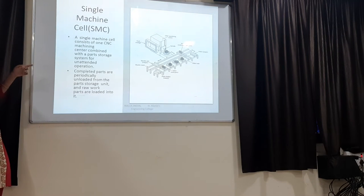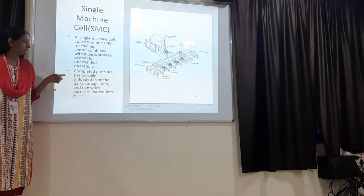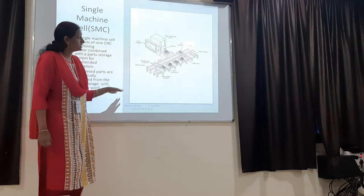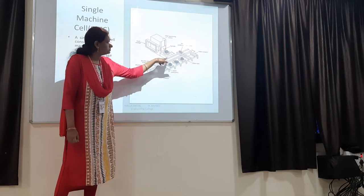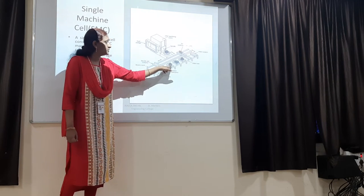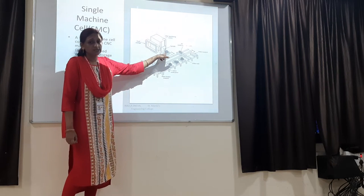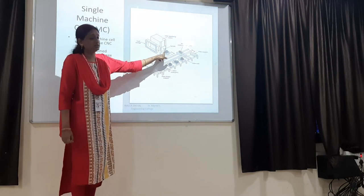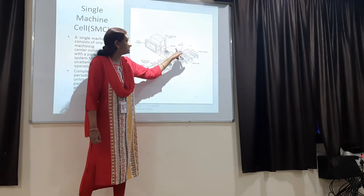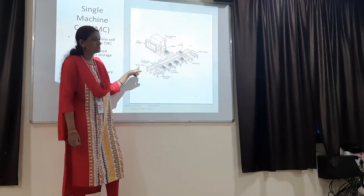In a single machine cell, there is one CNC machine and pallets. Goods are transferred from one pallet to another and carried to the CNC machining system where the work process is carried out. After the product is manufactured, it is moved back onto the pallets and taken to the required place. This is known as a single machine cell.